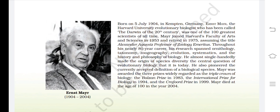He almost single-handedly made the origin of species diversity the central question of evolutionary biology that it is today. He also pioneered the currently accepted definition of biological species. Mayr was awarded the three prizes widely regarded as the triple crown of biology: the Balzan prize in 1983, the International prize for biology in 1994, and the Crafoord prize in 1999.